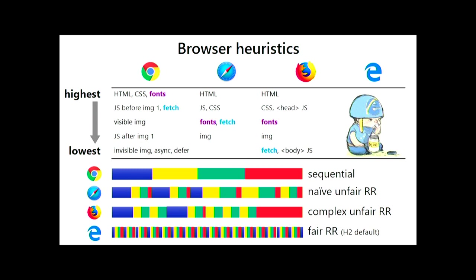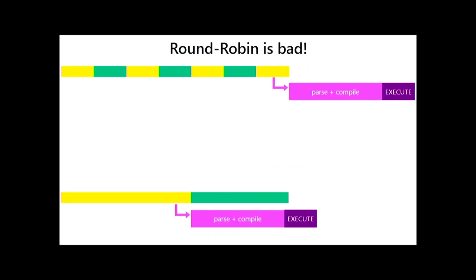For Edge, it didn't specify anything, so it falls back to the default in HTTP/2, which is fully fair round-robin behavior. We saw that was clearly the worst of everything. But why? If you remember, the orange and green resources were the JavaScript and CSS that were render-blocking. All the way at the end, we're still downloading those resources. We have to download these in full to be able to execute them and get them usable. If you start round-robining between this kind of resource, you're actually delaying when that moment happens. It is actually much earlier if you send them sequentially.